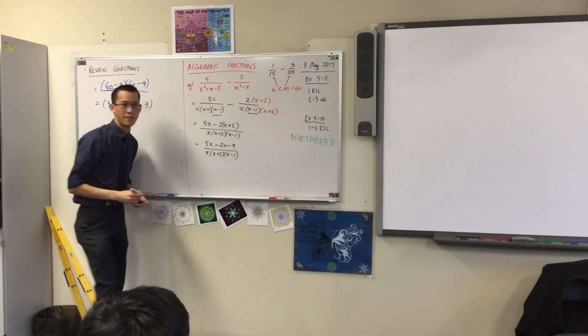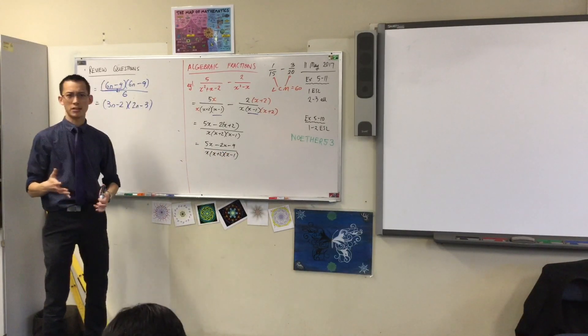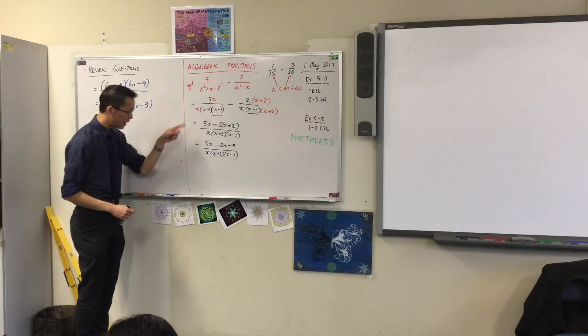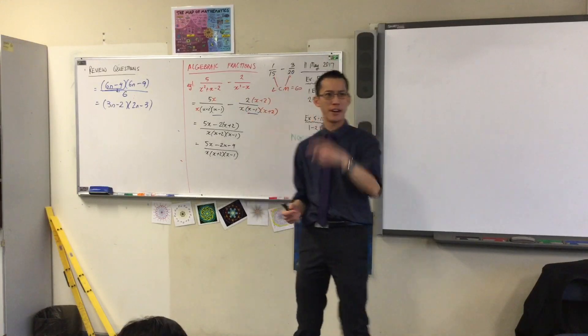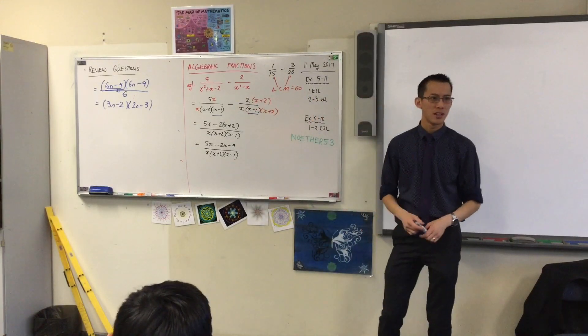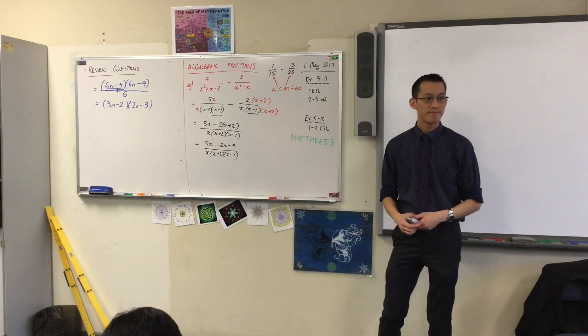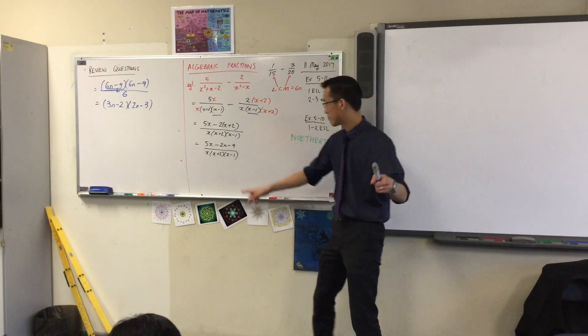The denominator I'm going to leave factorized. Hold on a second. I expanded the top. I didn't expand the bottom. Why? Why would you choose to expand one but not the other, right? Is it because it's a lot simpler having the denominator in the unexpanded form? Yeah.